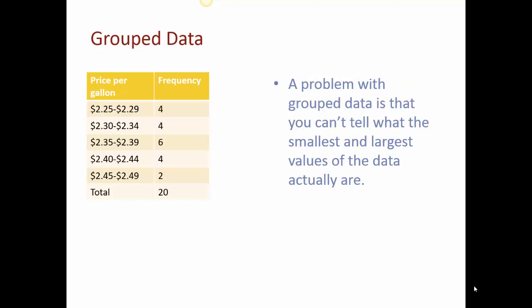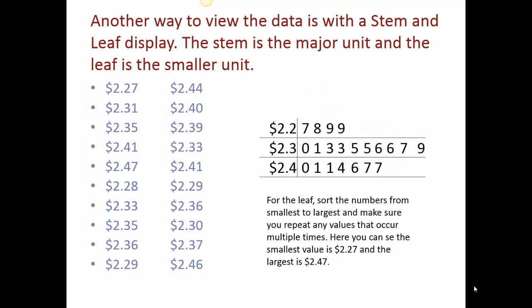A problem with group data is you can't tell the smallest and largest values of the data actually are. So if we wanted to get around that, we could add a different kind of chart. And this was called a stem and leaf display. The stem is the major unit and the leaf is the smaller unit. So it could be dollars as the major and cents as the minor. It really depends on the individual data set we're looking at.